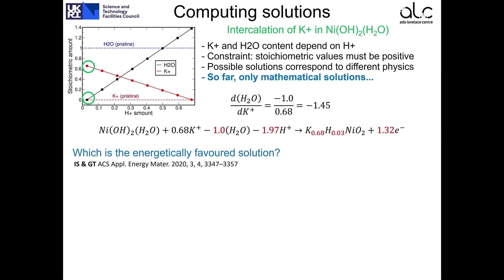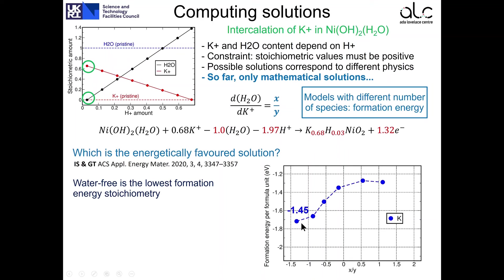After having generated the atomistic structures and performed DFT simulations, we are ready to address this question: which is the energetically favored solution following intercalation? Before doing so, we realized that we compare structures that contain different number of species, so we need to work with the formation energy. In addition, we're going to use this parameter X divided by Y that, as we have shown before, corresponds to the amount of water in comparison to the amount of cations that participate in the reaction. Results are shown here. We obtain that the lowest formation energy per formula unit happens when the value of X divided by Y is equal to minus 1.45. And if you remember, this corresponds to this solution that contains no water following intercalation.